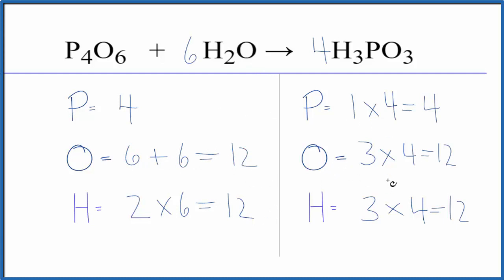So when you're balancing equations, a good strategy is to leave the oxygen atoms to last. This is Dr. B. The balanced equation for P₄O₆ plus H₂O. Thanks for watching.